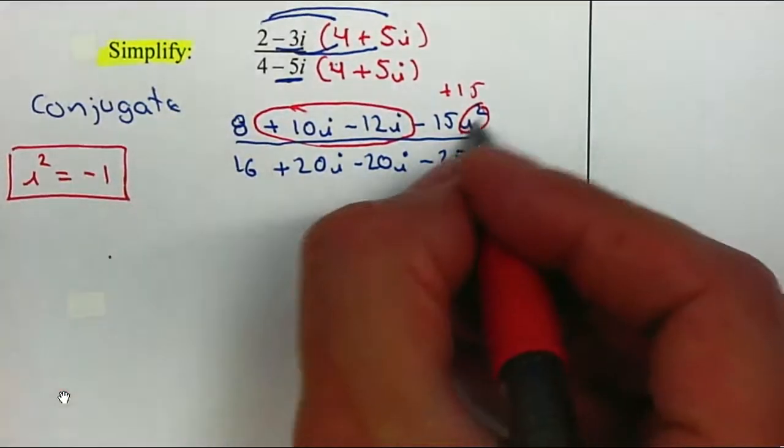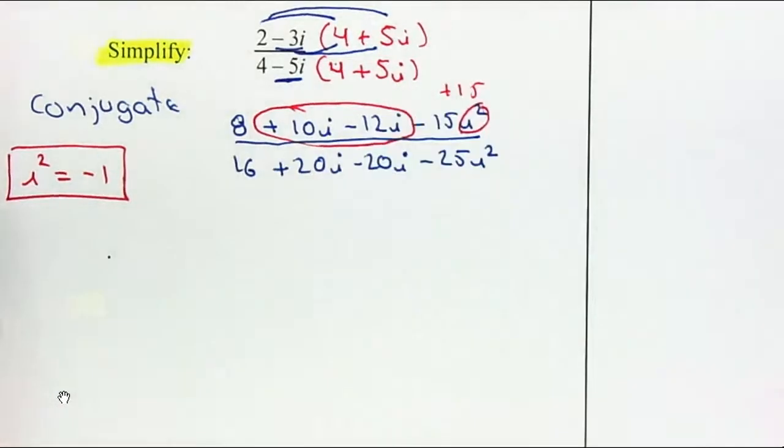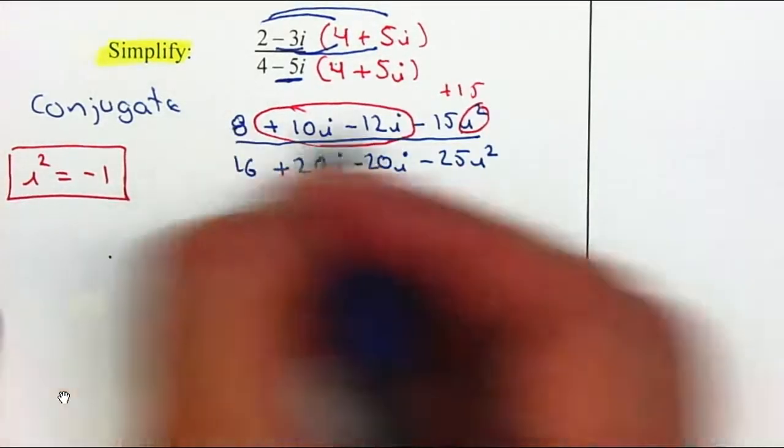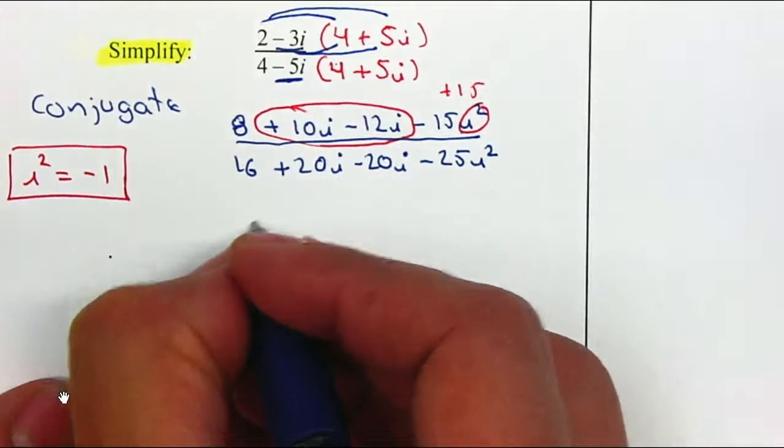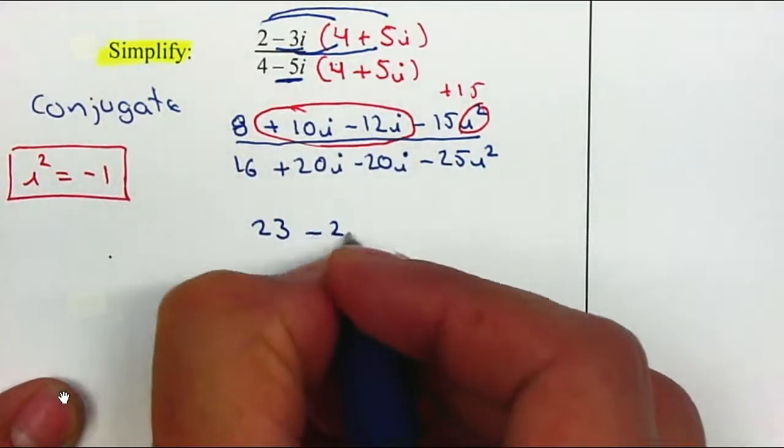So negative 1 times negative 15 becomes positive 15. We're going to combine like terms. 8 plus 15 gives 23. 10i minus 12i gives minus 2i.